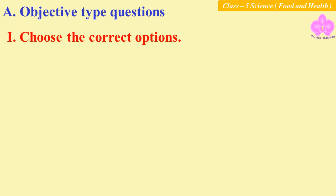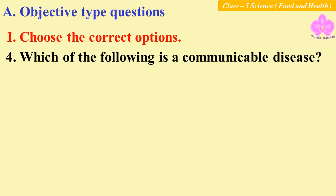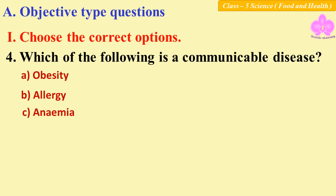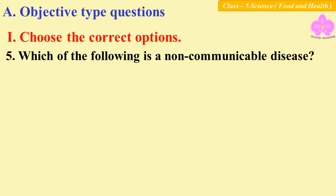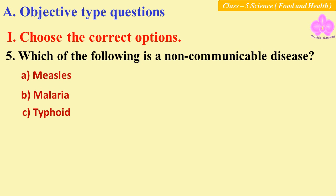Question four: which of the following is a communicable disease? Options: A: obesity, B: allergy, C: anemia, D: typhoid. Answer: D, typhoid. Question five: which of the following is a non-communicable disease? Options: A: measles, B: malaria, C: typhoid, D: goiter. Answer: D, goiter.